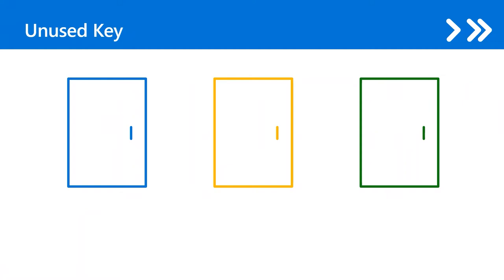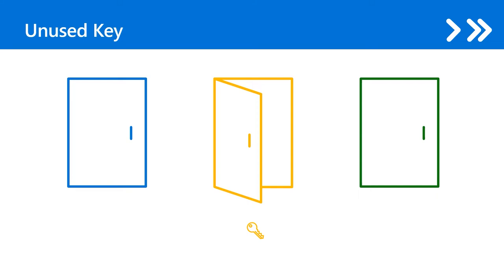Imagine that there are three locked doors. Behind the doors are your assets. Then you have three pairs of keys that allow you to open the corresponding door. For example, the blue key can open the blue door. If you only need access to the second door, then you should only carry the yellow key with you. To better protect your assets, you should only have the key you need and keep the other keys somewhere safer.